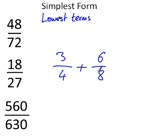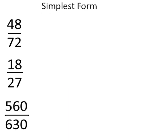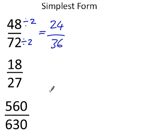You would come to some kind of answer and then you would have to simplify it all the way to the very end. Take 48 over 72 — we'll start by simplifying it, dividing top and bottom by 2. Two goes into both the top and the bottom, giving us 24 over 36. Yes, it's been simplified, but no, it hasn't been written in its lowest terms or simplest form.